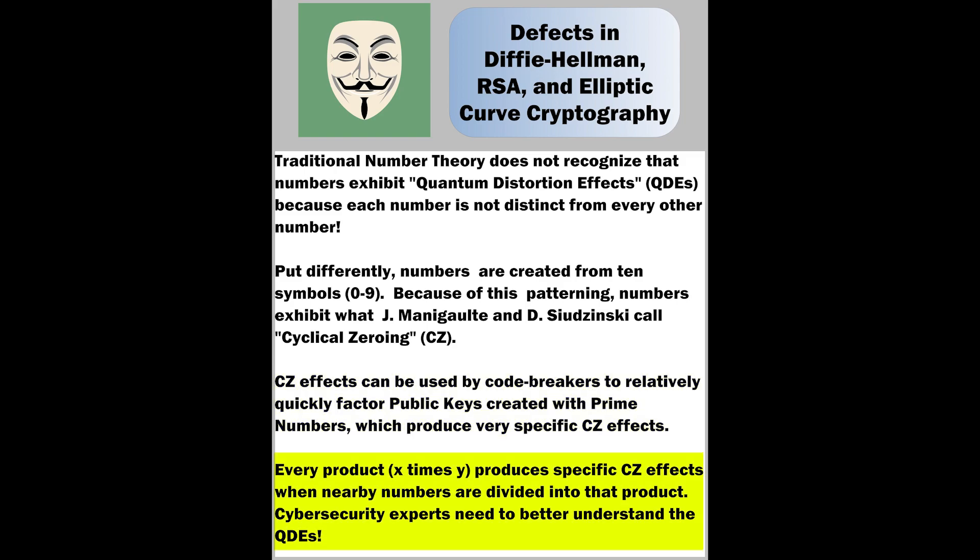Every product, X times Y, produces specific CZ effects when nearby numbers are divided into that product. Cybersecurity experts need to better understand the quantum distortion effects of number theory.